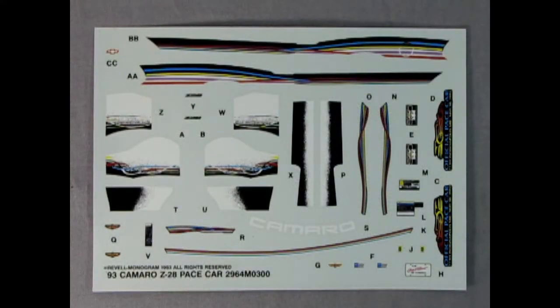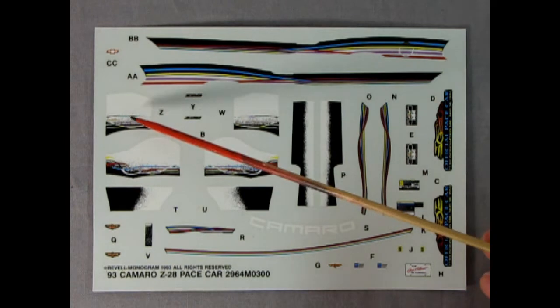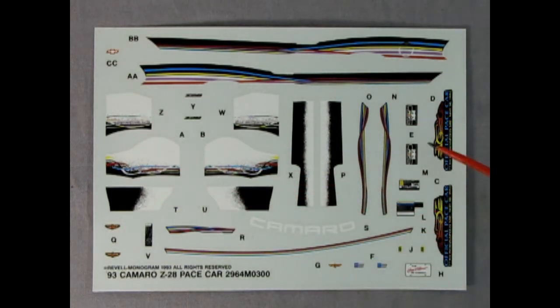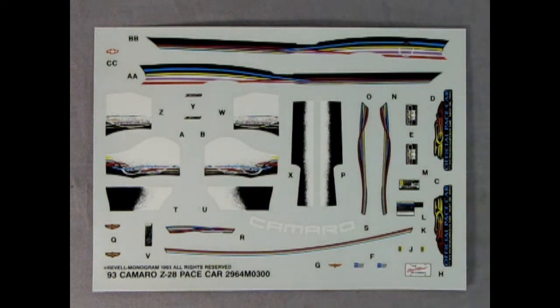And here we have our wonderful 1993 Camaro Z28 Pace Car decal sheet. Here's the side decals, the Chevy logo, the interior decals, and then the side door decals, and all the stuff that goes up under the hood. A license plate that says Chevrolet is the heartbeat of America. And our Camaro window decal. There's some of the Indianapolis decals on there. And again, a really wonderful sheet made by Monogram.